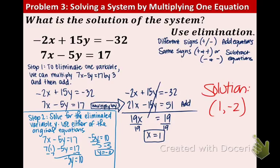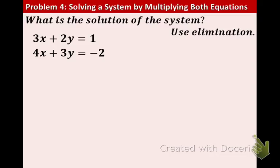Now, this example, we only multiplied one equation. Sometimes we must multiply both equations in order to eliminate one of the variables. So please take a moment to look at these two equations. We have 3x plus 2y equals 1 and 4x plus 3y equals negative 2. We need to find the solution and use elimination.